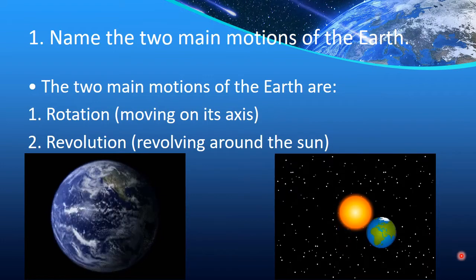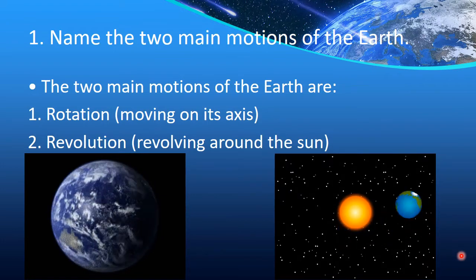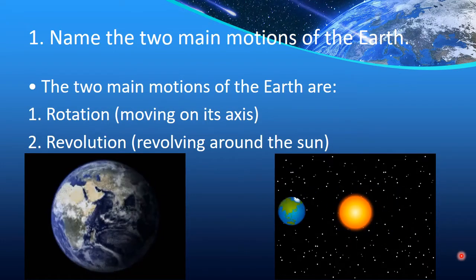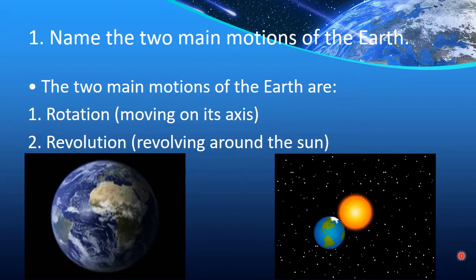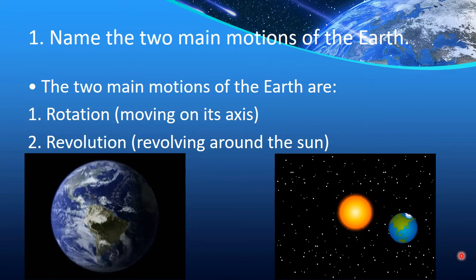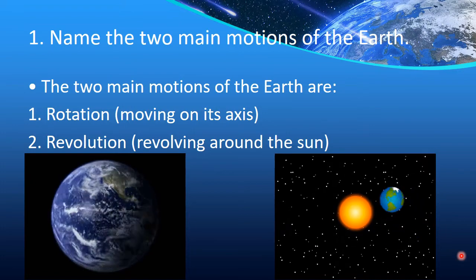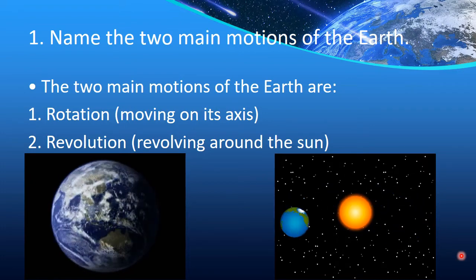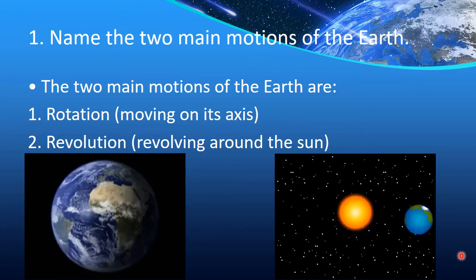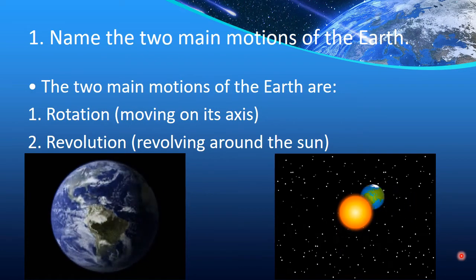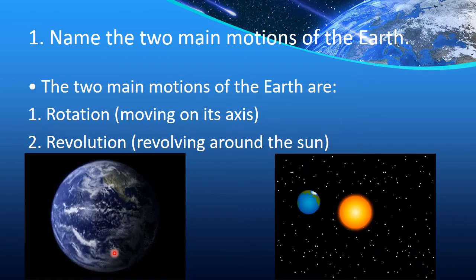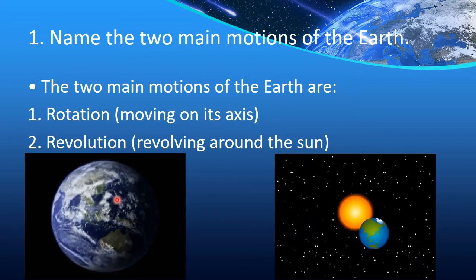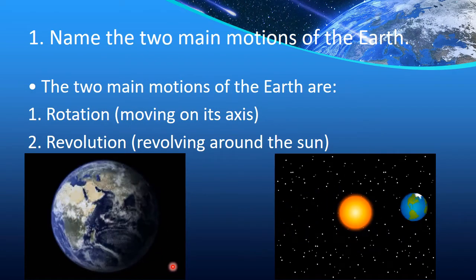Question 1: Name the two main motions of the Earth. Now this is a very direct question, we already know. The two main motions of the Earth are rotation, moving on its axis, and revolution, revolving around the Sun.